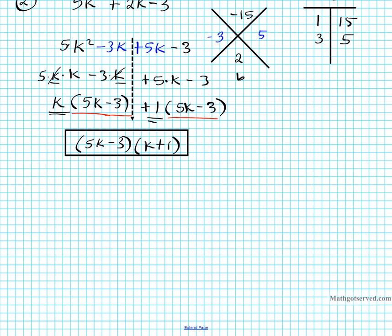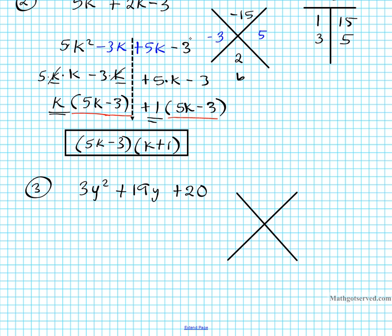Let's try example 3: factor 3y squared plus 19y plus 20. We have three terms and need to make it four so we can break it down to center and factor by grouping. 19 is our target number to be replaced. To know what to replace 19 with, I'm going to play the x game. I put ac on the top and b on the bottom. Ac is 3 times 20 which is 60, and b is 19. What two numbers multiply to give me 60 and add to give me 19?